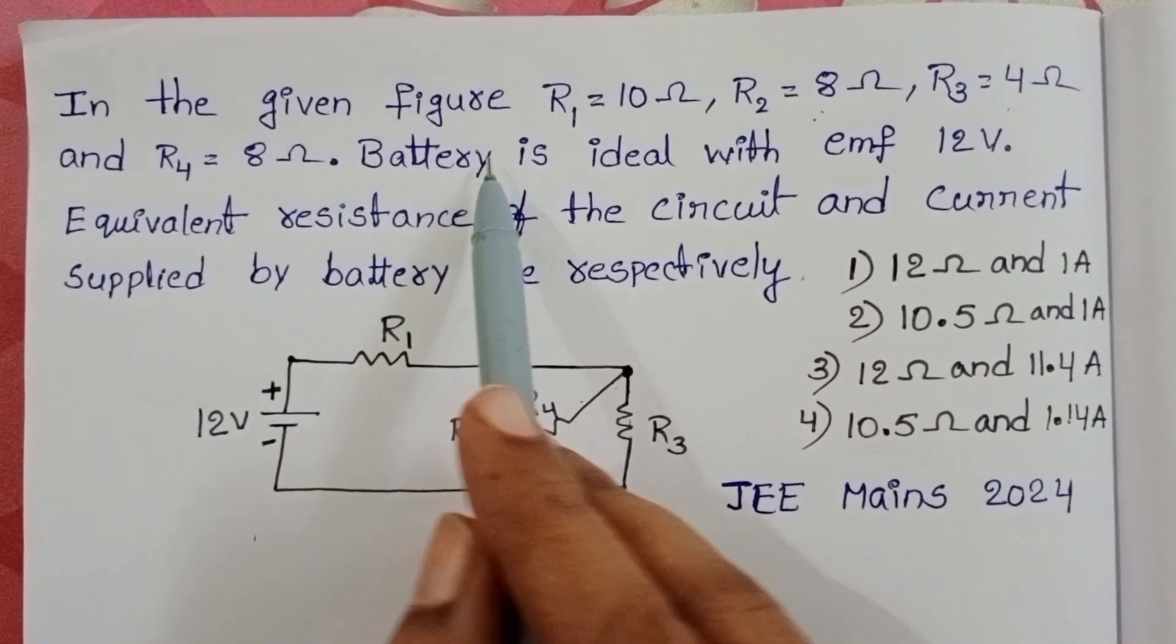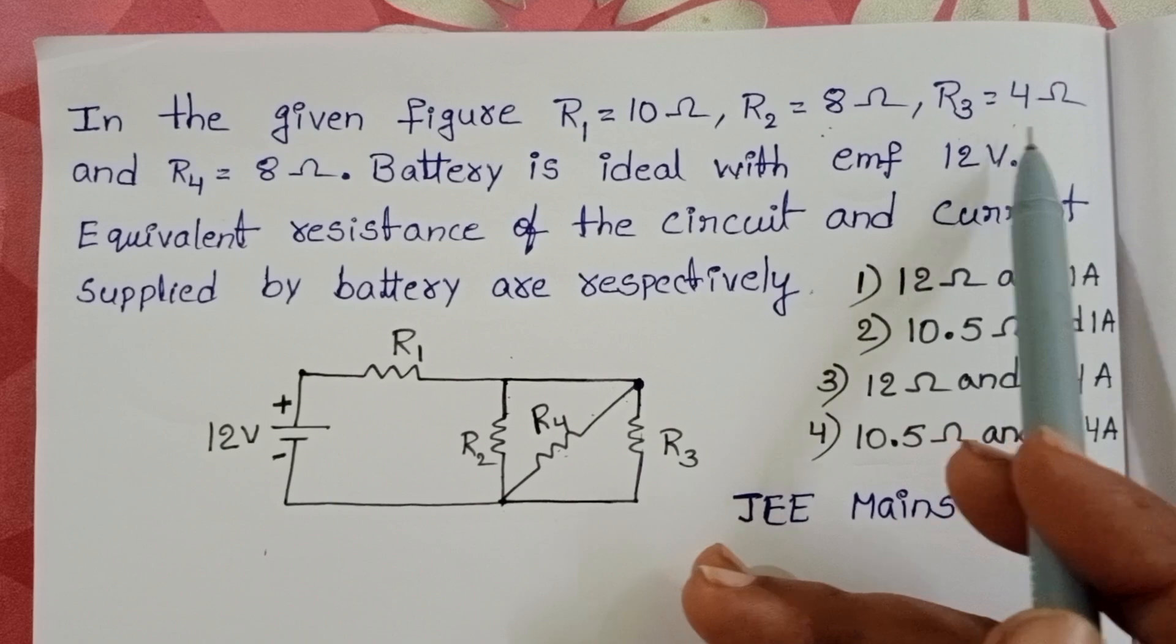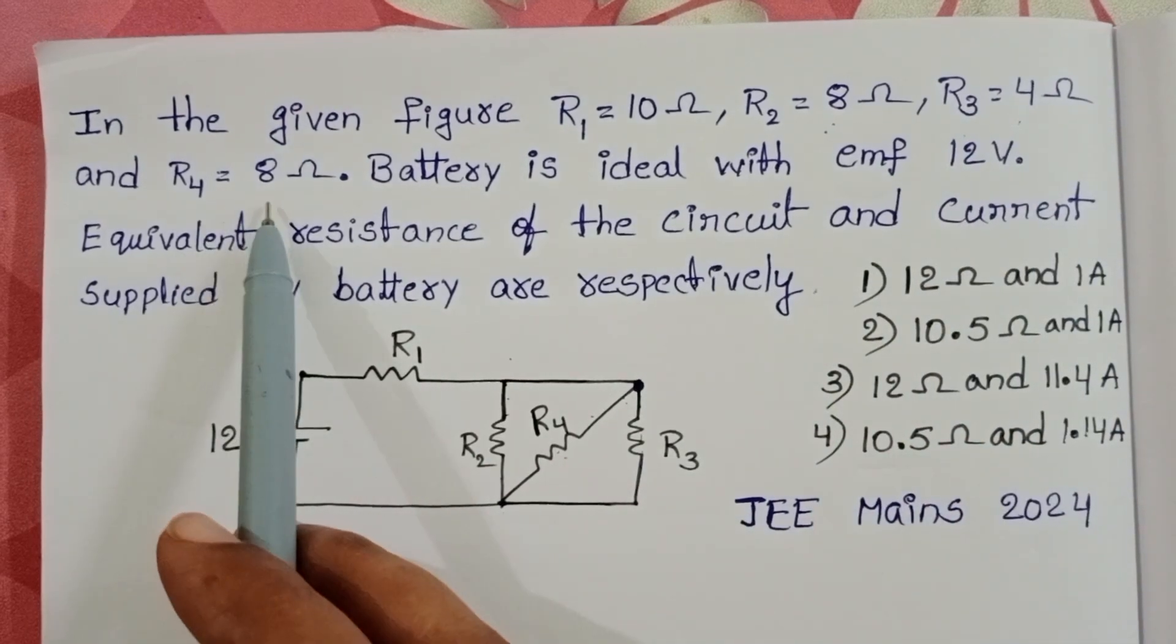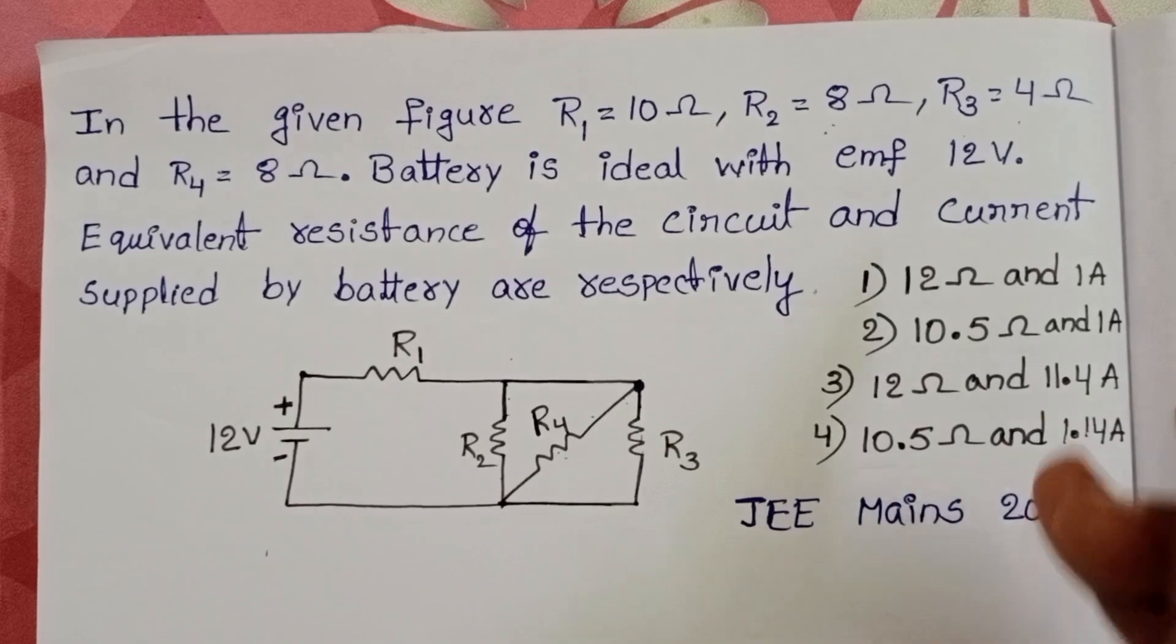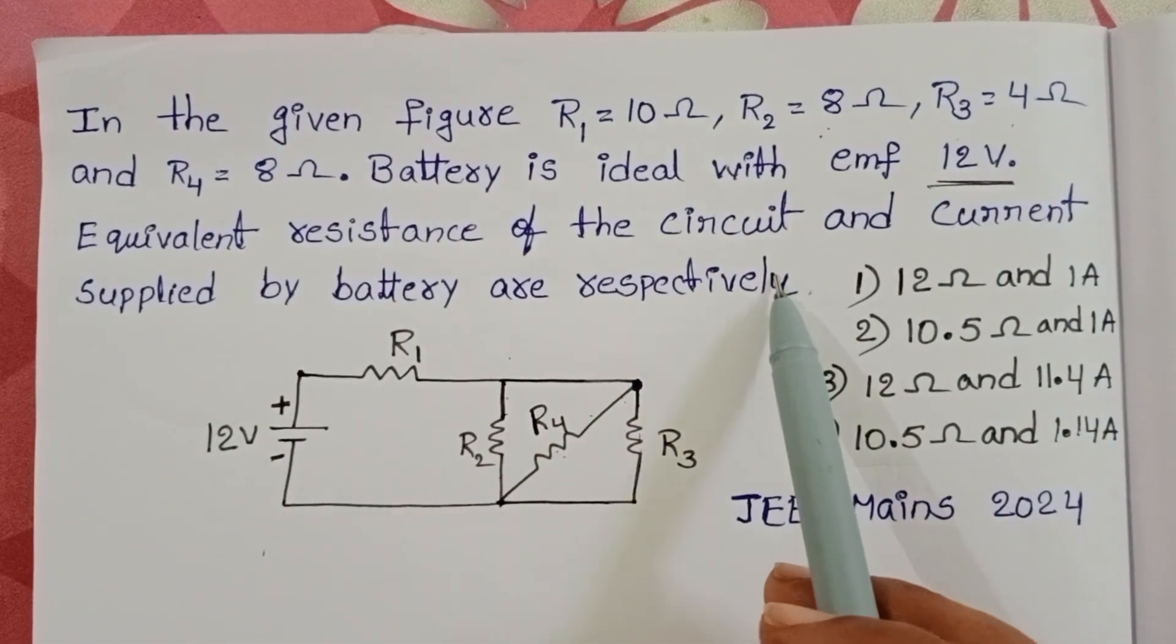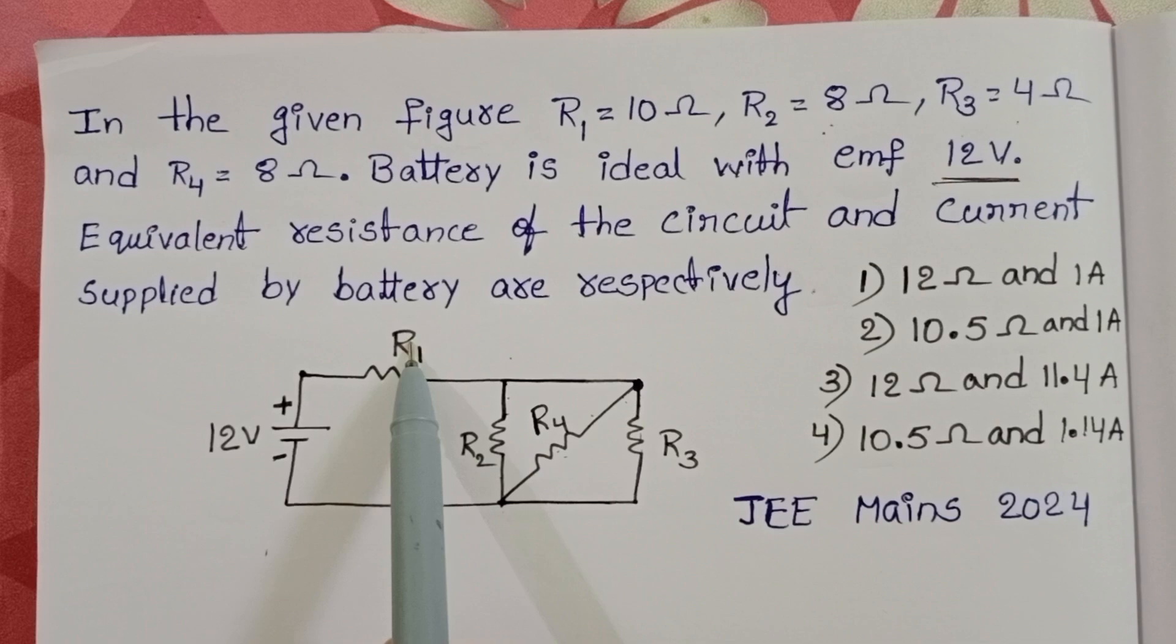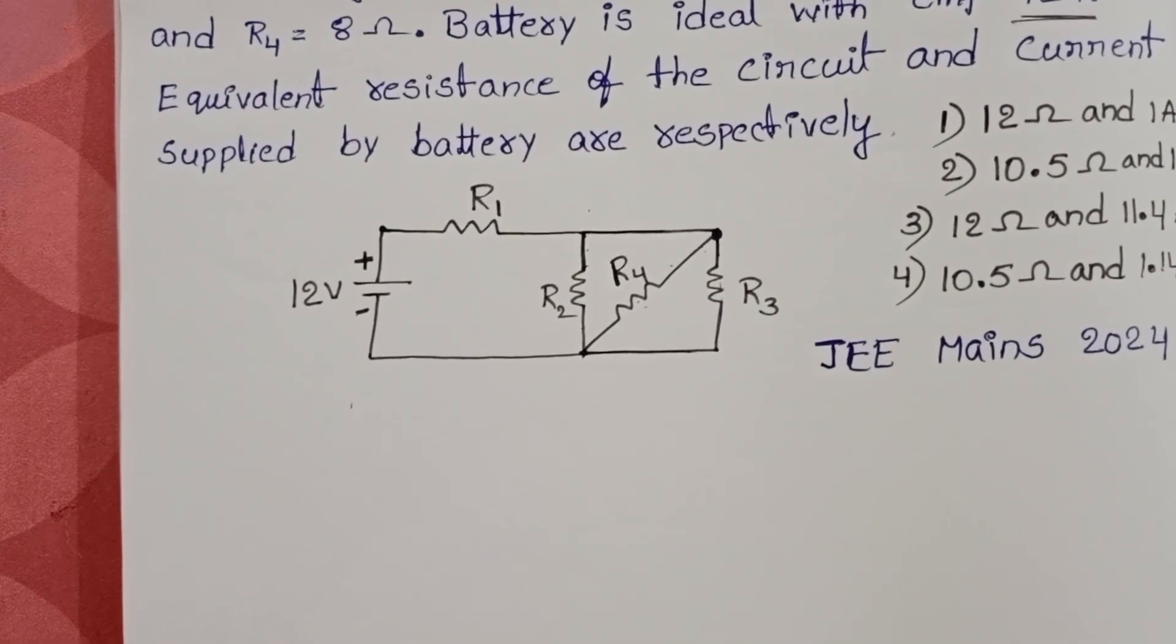In the given figure, R1 equals 10 ohm, R2 is 8 ohm, R3 is 4 ohm, and R4 equals 8 ohm. Battery is ideal with EMF 12 volts. Find the equivalent resistance of the circuit and current supplied by the battery respectively. This is the given diagram.